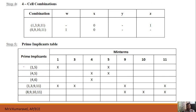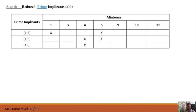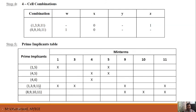The next step is the reduced prime implicant table. We consider the remaining prime implicants: 1,5 — 4,5 — and 4,6. From these, it is clear we need only the 4,5 combination to cover minterms 4 and 5. Therefore, we select only the 4,5 combination. The final prime implicants are: 1,3,9,11 — 8,9,10,11 — and 4,5.